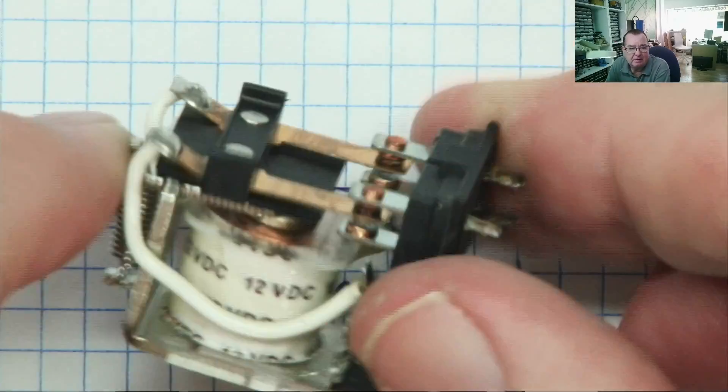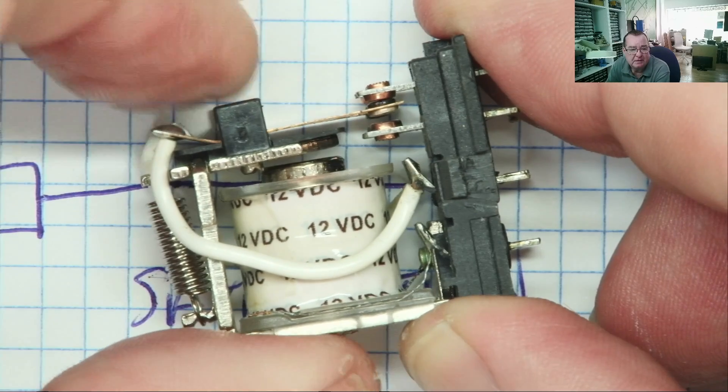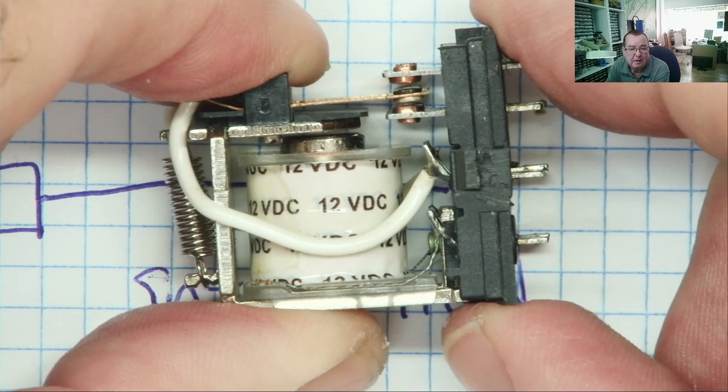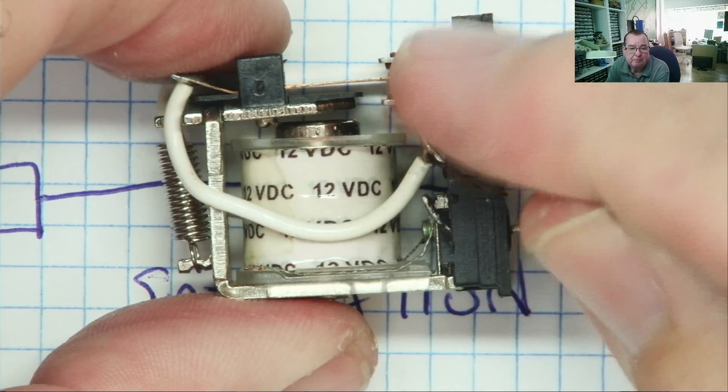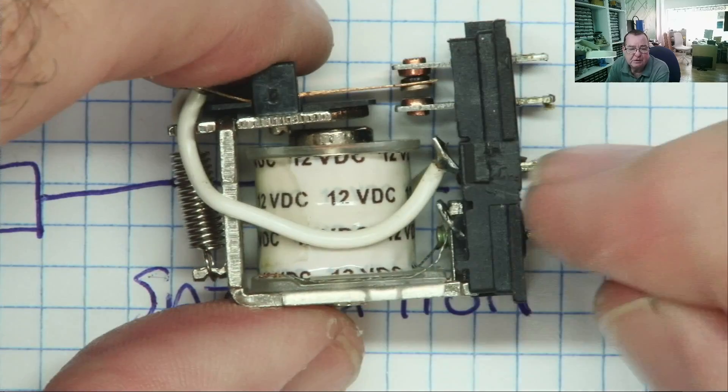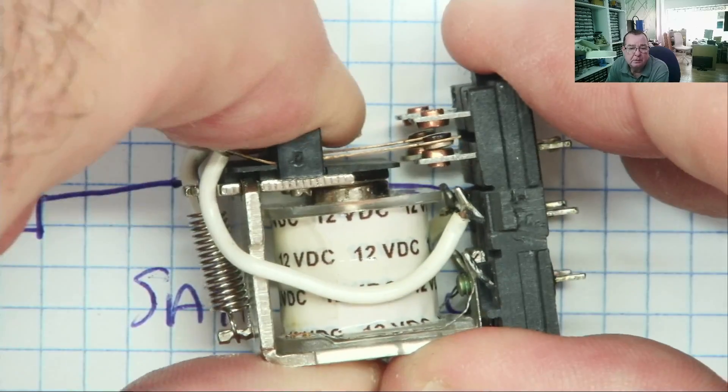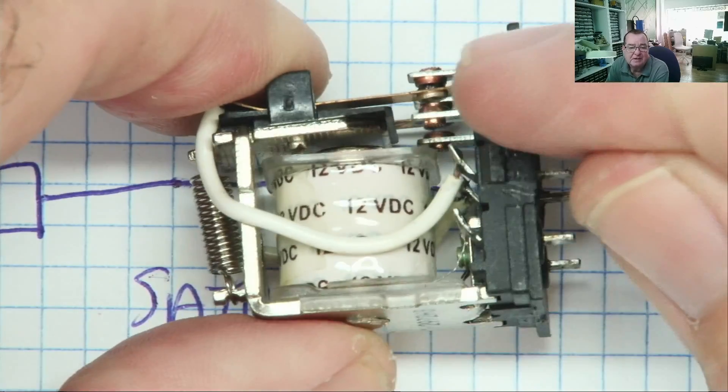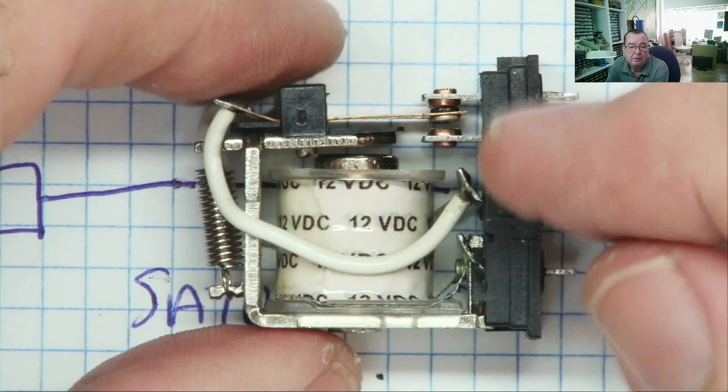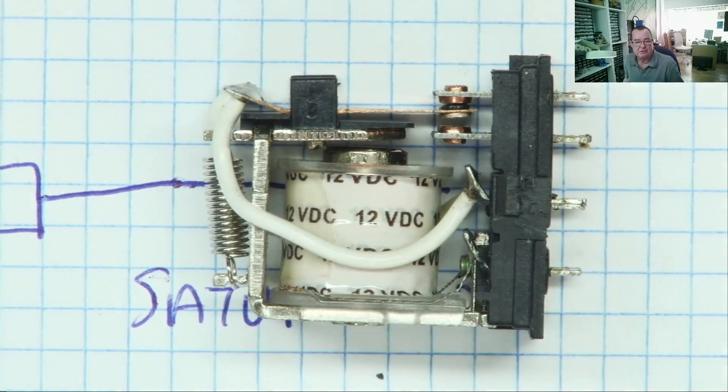So here is our relay. You see that this part here can move. And in doing so, it moves the contact from this one to this one. So you can see there's a piece of wire comes up here to the top. That goes to this moveable part. And it connects either to this position or this position. So when there's no current passing through the coil, the relay is in this position. Now let's pass some current through our coil and see what happens.